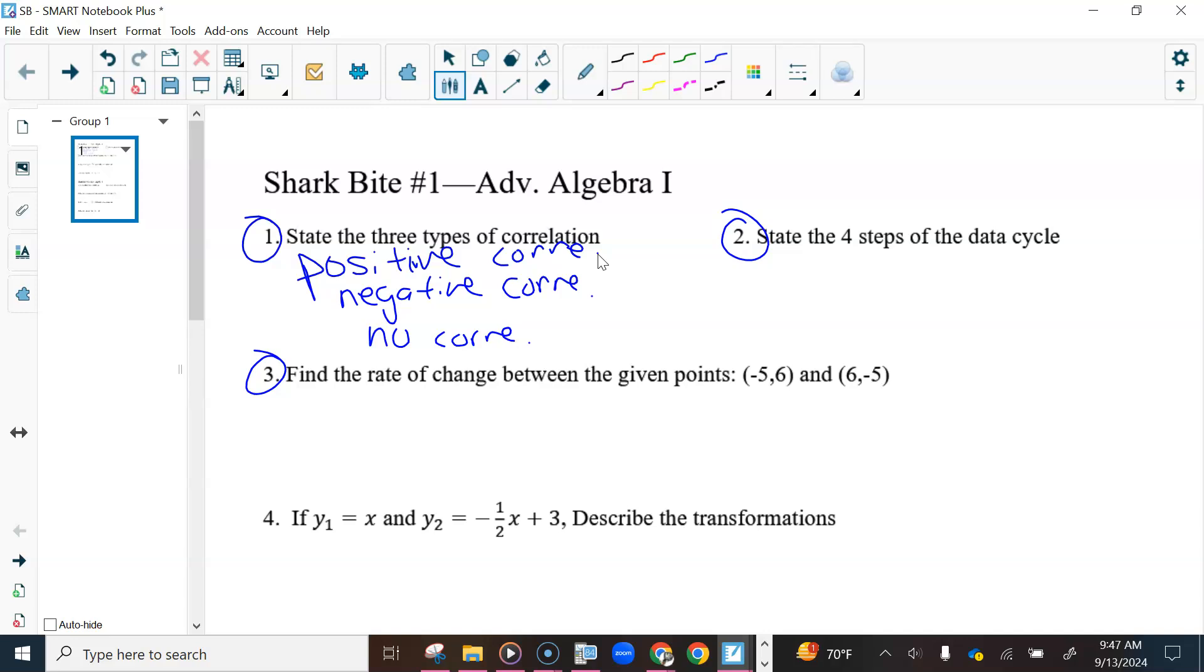The four steps of the data cycle are formulate questions, collect and represent data, collect or acquire data, sorry, organize and represent data, and then analyze the data. If you can, you can get the results. So I'm not writing all of that.